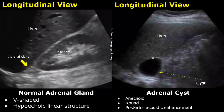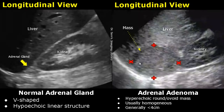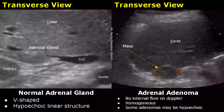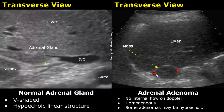The first case is of adrenal cyst — an anechoic round structure. A right adrenal cyst will be seen between the liver and the right kidney. An adrenal adenoma is a benign tumor involving the adrenal gland with variable appearances. In this image it is a hyperechoic round and ovoid mass with a homogeneous echo texture, usually less than 4 centimeters. In another transverse view the adenoma is hypoechoic — some adenomas can be hypoechoic. It is a homogeneous well-circumscribed mass with no internal flow on Doppler.